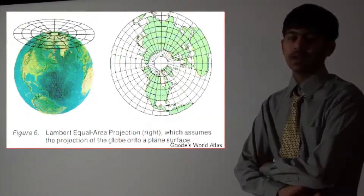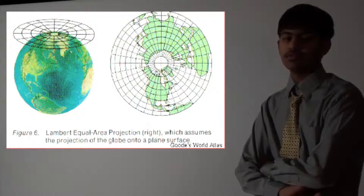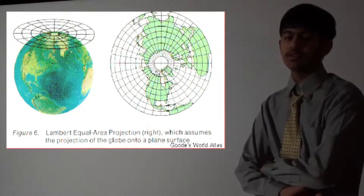Planet projections were made to show the shortest way between two points. They show the polar regions very well.